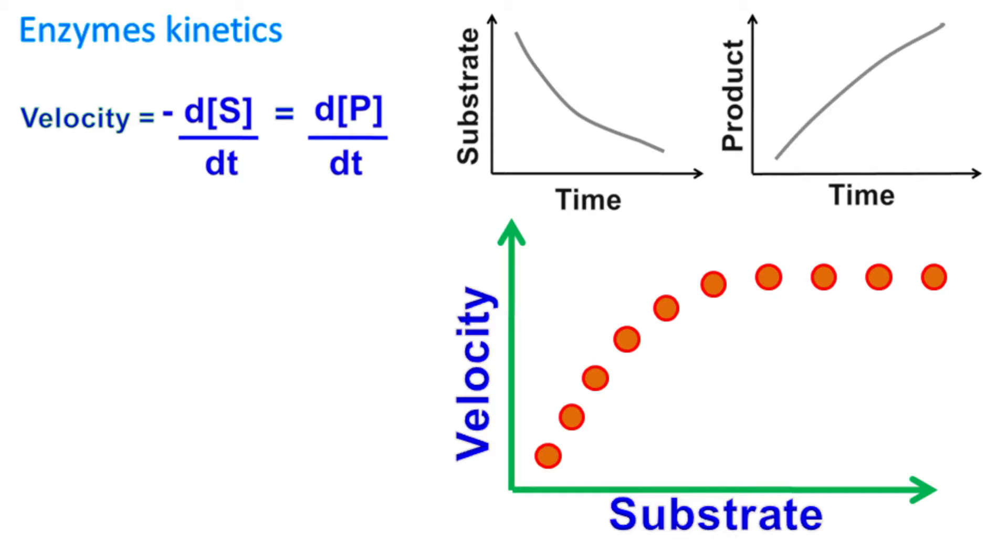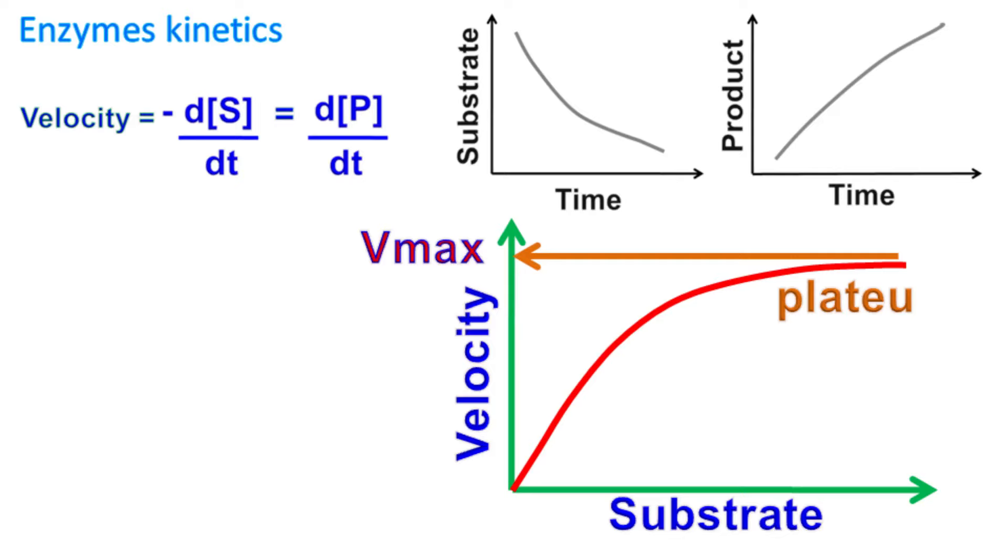This is something that is seen experimentally. With an increase in substrate concentration, the velocity of the reaction increases until it reaches a plateau. This is called maximum velocity or Vmax for that particular enzyme.